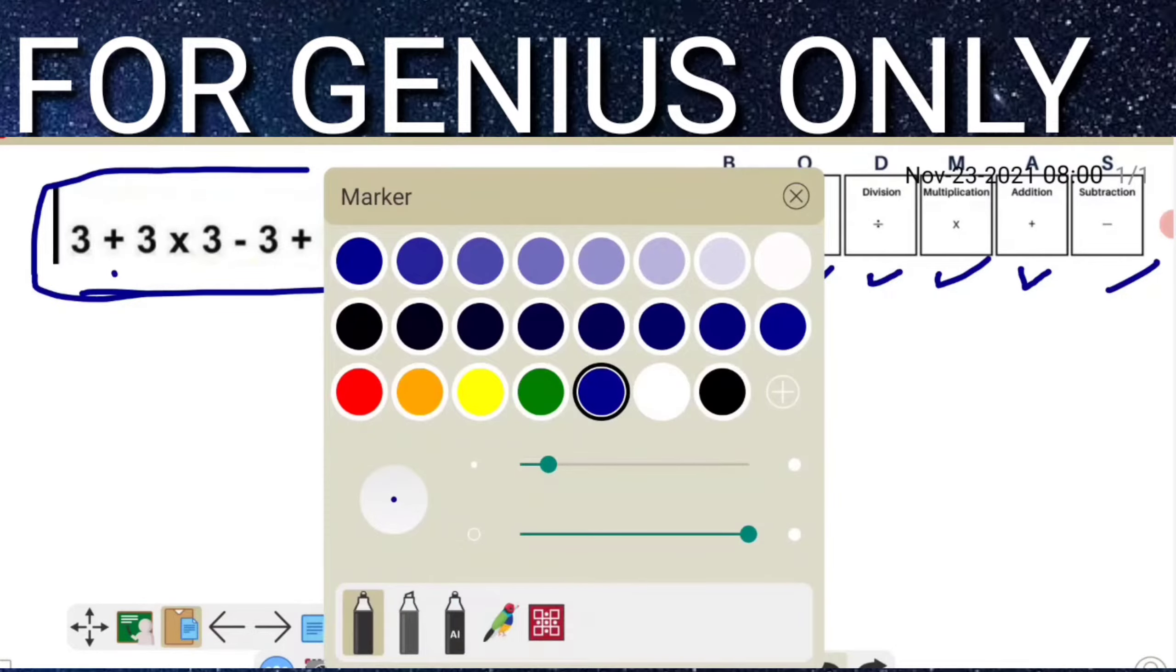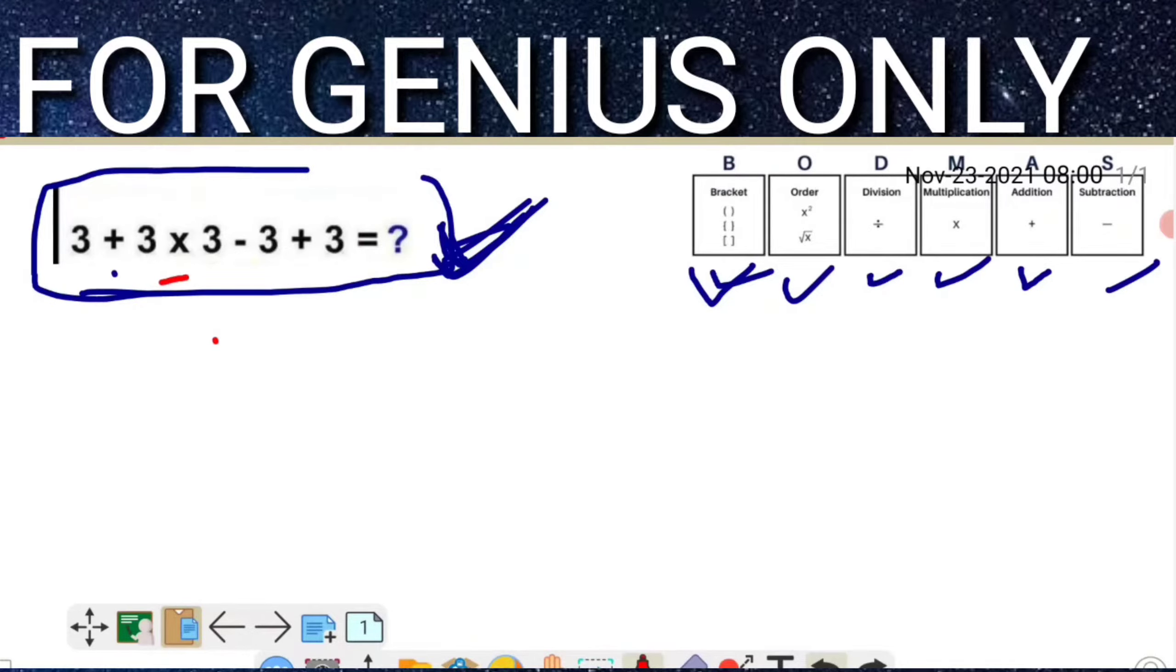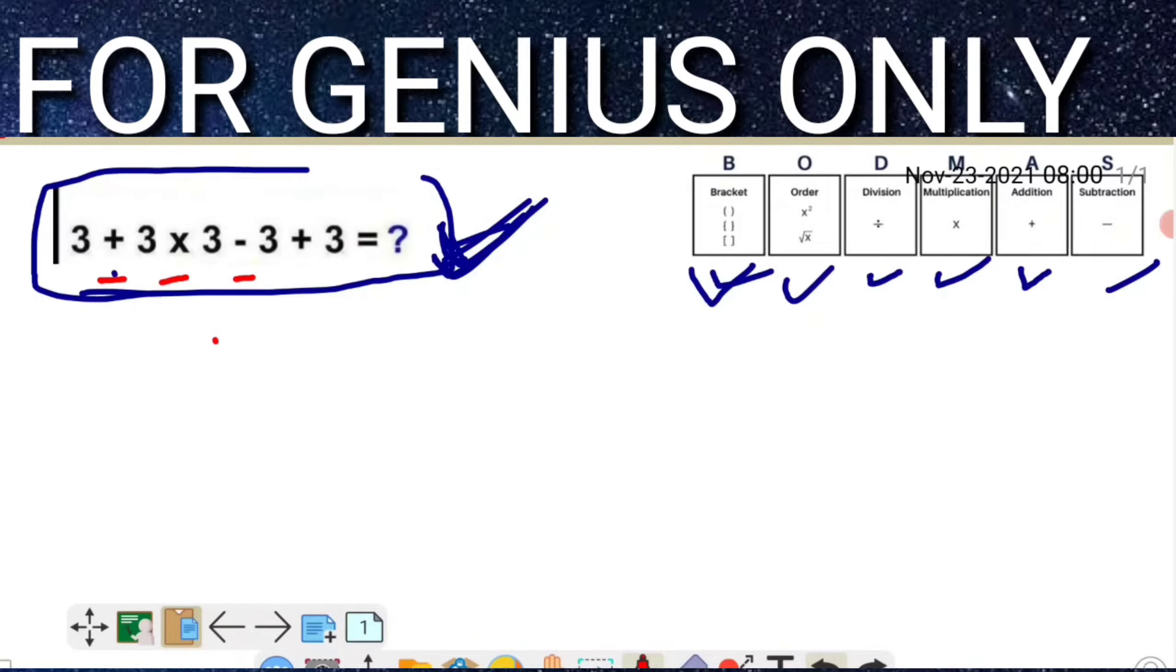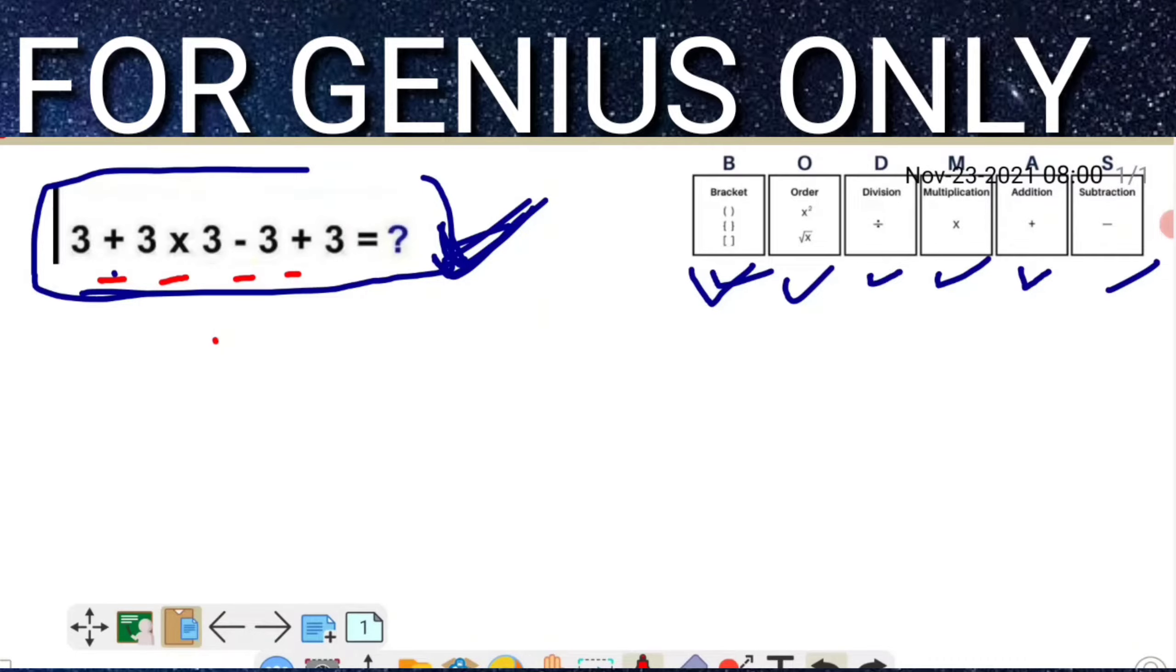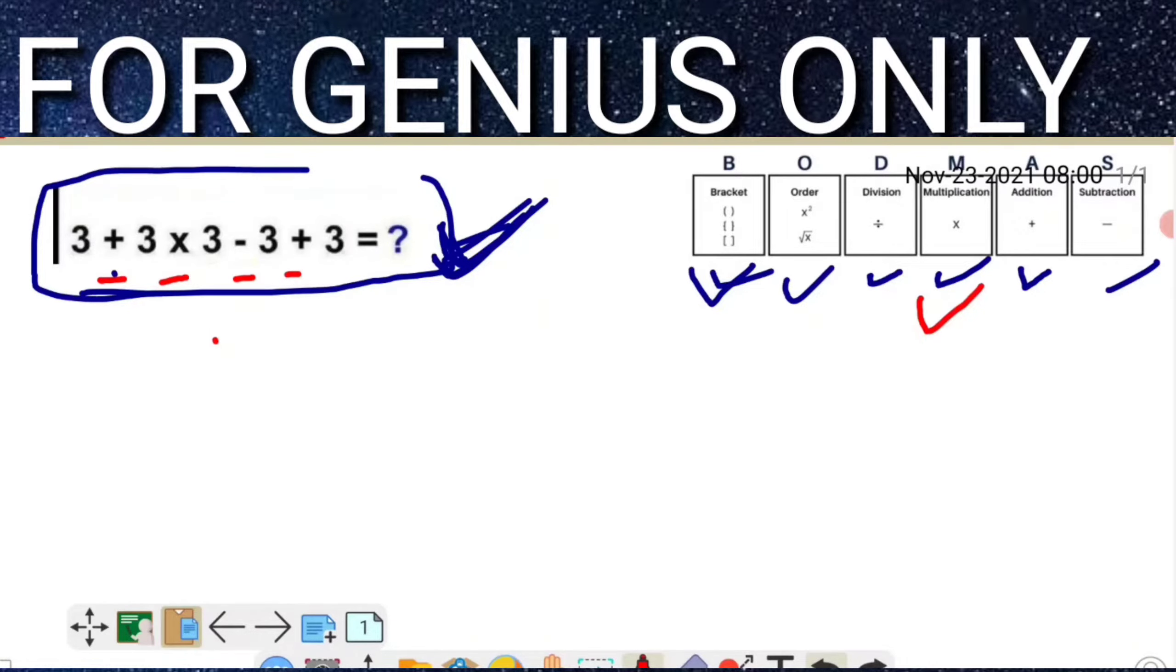In this equation, we have multiply, addition, and subtraction signs. What we have to follow is: first solve multiplication, then addition, and lastly subtraction.